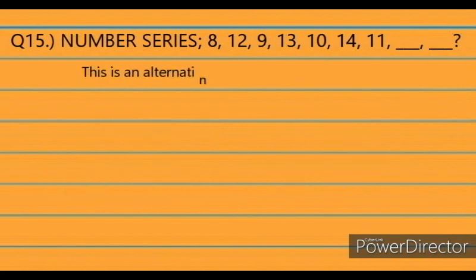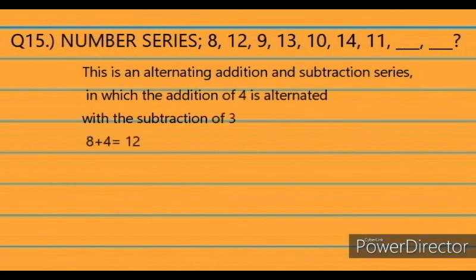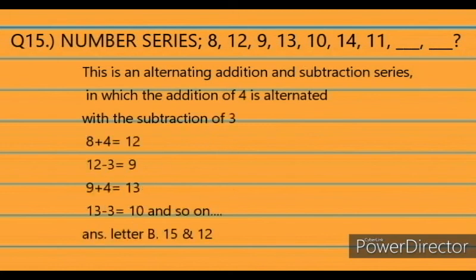Solution: This is an alternating addition and subtraction series, where addition of 4 alternates with subtraction of 3. So: 8 plus 4 equals 12; 12 minus 3 equals 9; 9 plus 4 equals 13; 13 minus 3 equals 10; and so on, giving 15 and 12. The answer is letter B.